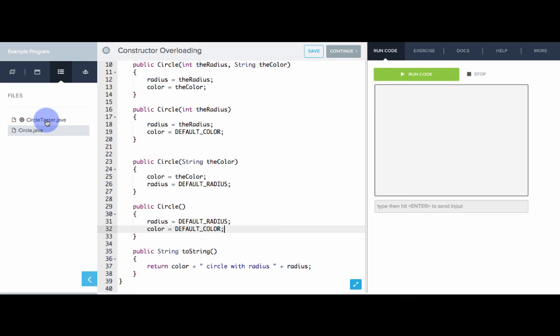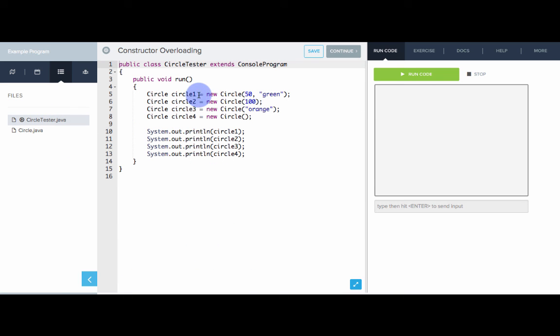Now, I've made a circle tester class that's calling each of these. This one specifies both. This one specifies only the radius, only the color, and none. Let's see what gets printed out. Great. This correctly made a green circle of radius 50. This one used the default color blue. Radius is correctly set to 100. This one had the color orange, and the radius was correctly set to the default of 10. And this one had both default values, blue and 10. Great. So, that is how we can use method overloading in our classes.